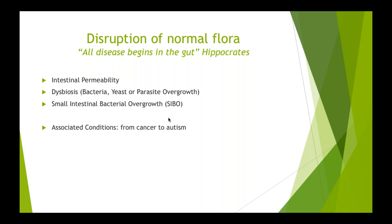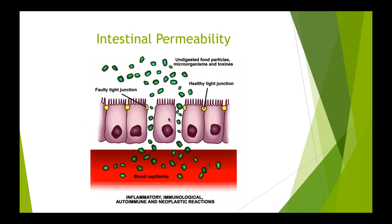Disrupted gut flora is also linked to mood disorders like anxiety and depression, skin conditions like acne, rashes, and eczema — since the immune system lives there — and overall inflammation including cardiac disease, diabetes, and joint pain. The first disruption is intestinal permeability. Looking at this picture: the red part is our bloodstream where immune cells live; the purple is our gut lining, which is only one cell layer thick — the same type of tissue as our skin, called epithelium.